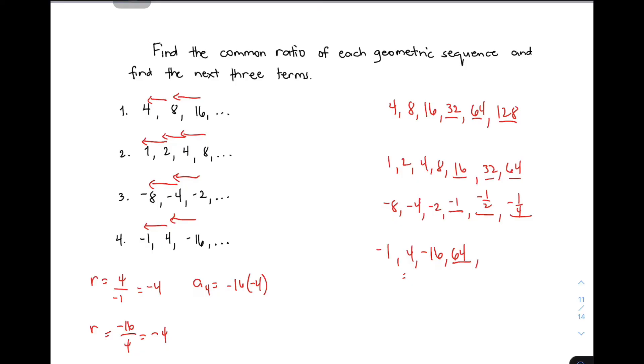Next, multiply 64 by -4. Sixty times 4 is 240, plus 16 is 256, but it should be negative because we're multiplying by -4. The fifth term is -256.